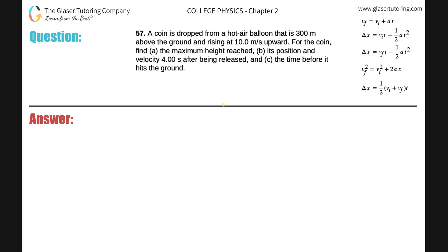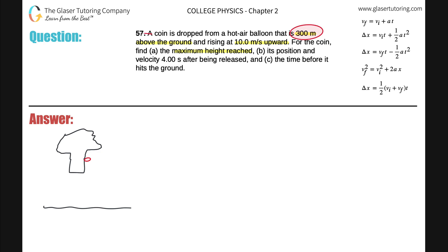Problem number 57: a coin is dropped from a hot air balloon that is 300 meters above the ground and rising at 10 meters per second upward. For the coin, find letter A - the maximum height reached. Let's draw a picture: here's the ground, here's the hot air balloon, and there's a coin in this hot air balloon. It says the coin is basically 300 meters above the ground at that moment.